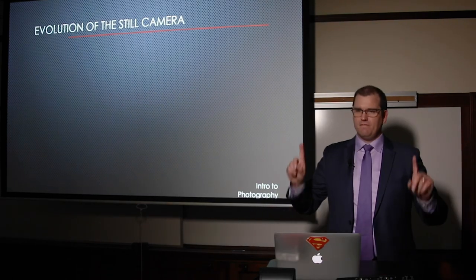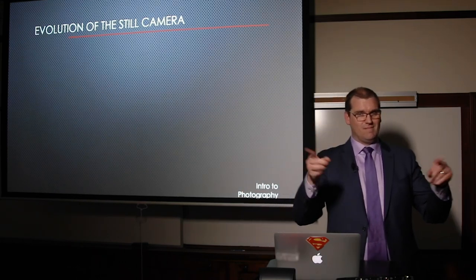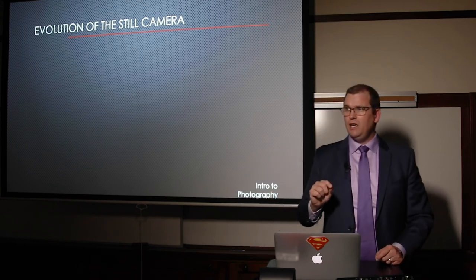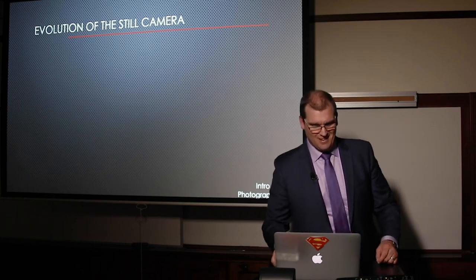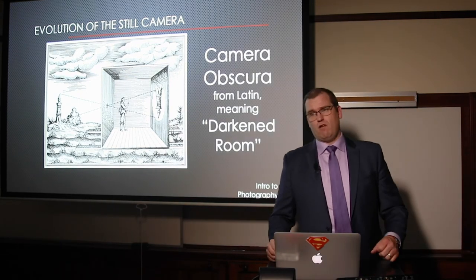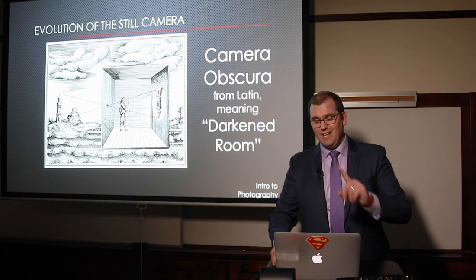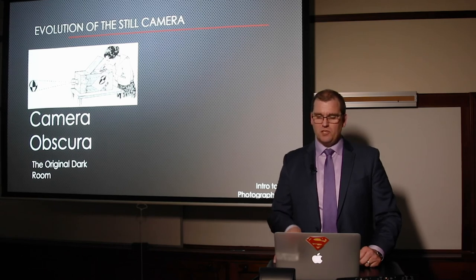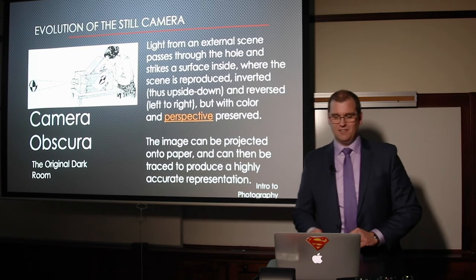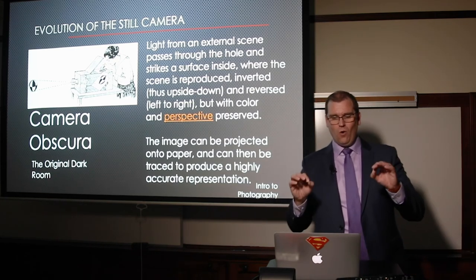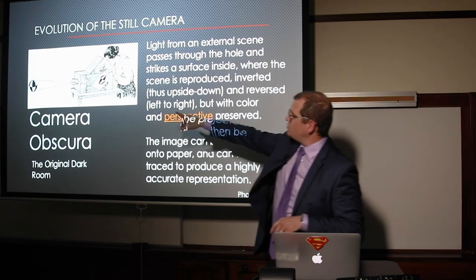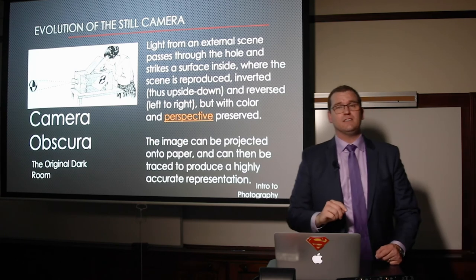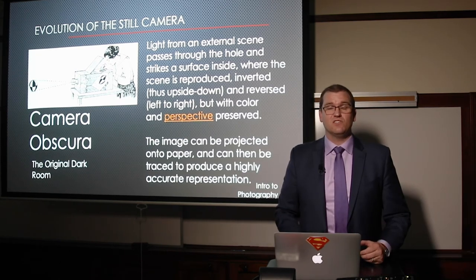Can anyone tell me the name of the first camera? It was first known to be used by a Chinese philosopher in the mid-5th century B.C. Camera obscura — Latin meaning dark room — was first used by Mozi, a Chinese philosopher during the 5th century B.C. The camera obscura is the original dark room. Light from an external source passes through a hole and strikes a surface inside, representing an image on the back wall of that box. That image is turned upside down and inverted — upside down and backwards.